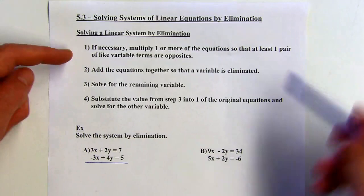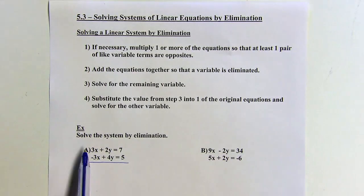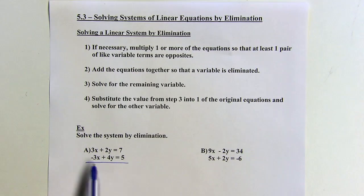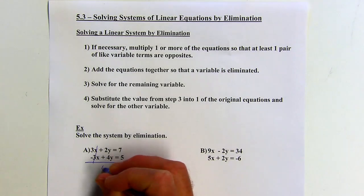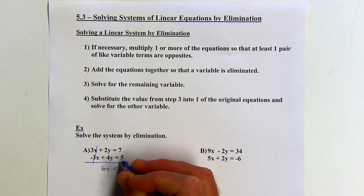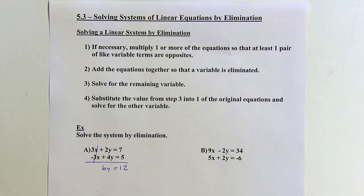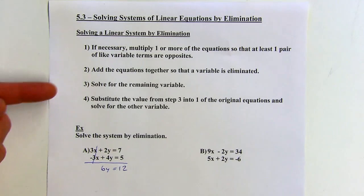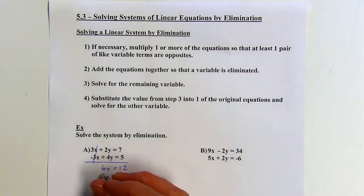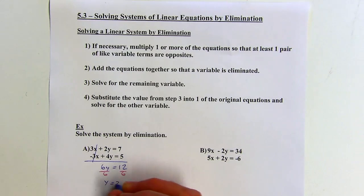I'm going to add the equations together so that a variable is eliminated. I'm thinking of adding 3x to negative 3x — they would cancel out. Then 2y plus 4y would be 6y, and 7 plus 5 is 12. So I added those two equations together and the x is eliminated. Now I've got a new equation with only one variable. Dividing both sides by 6, I get y equals 2.